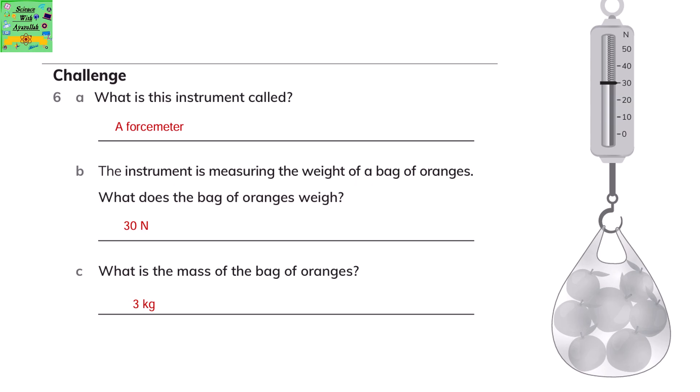What is this instrument called that's given in the picture? It's called a force meter. The instrument is measuring the weight of a bag of oranges. What does the bag of oranges weigh? It's 30 newtons. What is the mass of the bag of oranges? 3 kg.